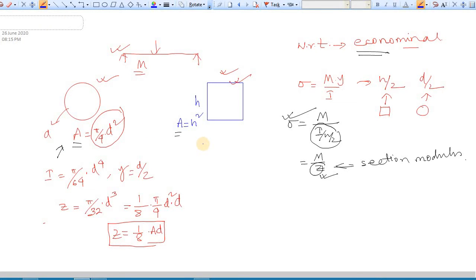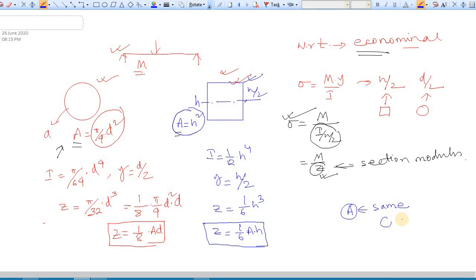Similarly, for a square section, if we find the section modulus, first your I is 1/12 times H⁴. Here Y is H/2, the distance of the extreme fiber from your neutral axis. Your Z is coming as 1/6 of H³. You know that area is given by H², so you can write Z as 1/6 area times H.